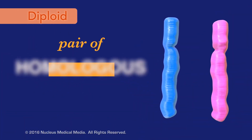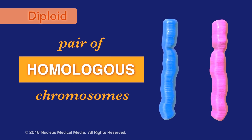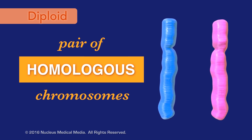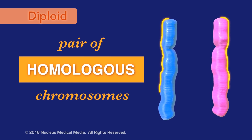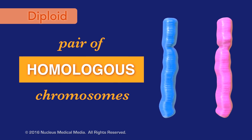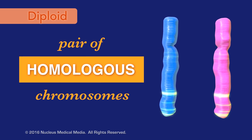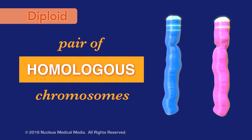Each pair contains one chromosome from the father and a corresponding chromosome from the mother. These pairs are called homologous chromosomes. Homologous chromosomes are similar in shape and size, along with the same types of genes in the same locations.